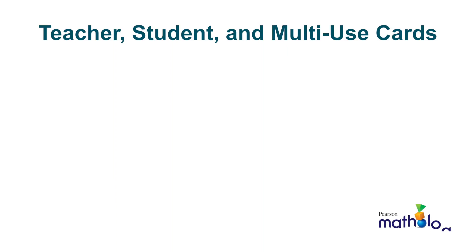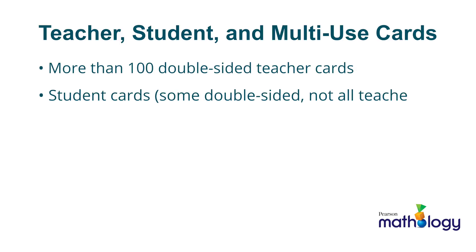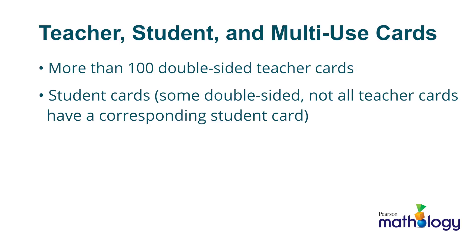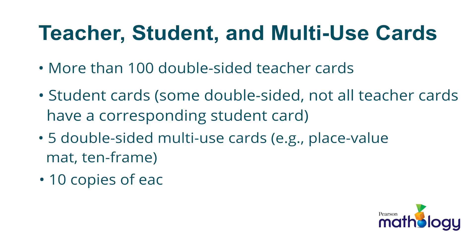On to the main part of the kit. You'll find more than 100 double-sided teacher cards, student cards — some are double-sided — not all the teacher cards have a corresponding student card, and 5 double-sided multi-use cards. For example, a place value mat and a 10 frame. Note that there are 10 copies of each student card as well as 10 copies of the multi-use cards. All cards are laminated.